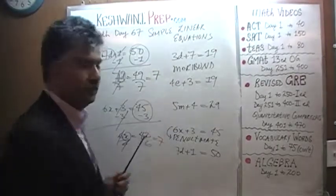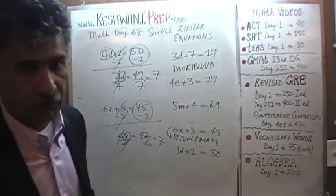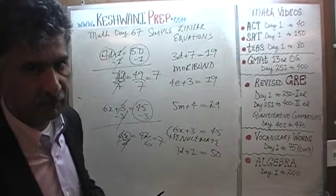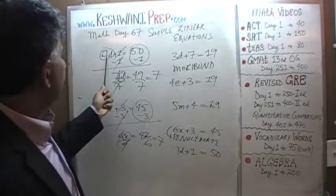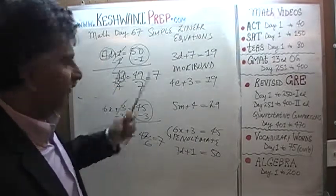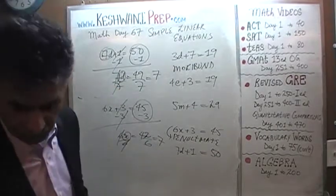How do we know that? Because we know our squares — 7 squared is 49, so 7 times 7 is 49. Put it back in: 49 plus 1 is 50 — that's exactly what we get here.